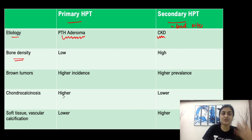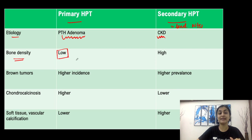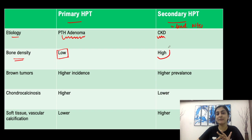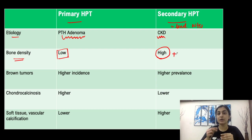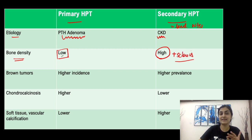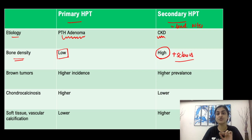The important difference on X-ray is bony density. In primary HPT there will be diffusely low bony density — osteopenia. In secondary HPT, there is osteopenia but also areas of sclerosis, meaning a mixed pattern of lysis and sclerosis. Osteopenia means bone density is low, while osteosclerosis means bone density is high, appearing whiter than usual.